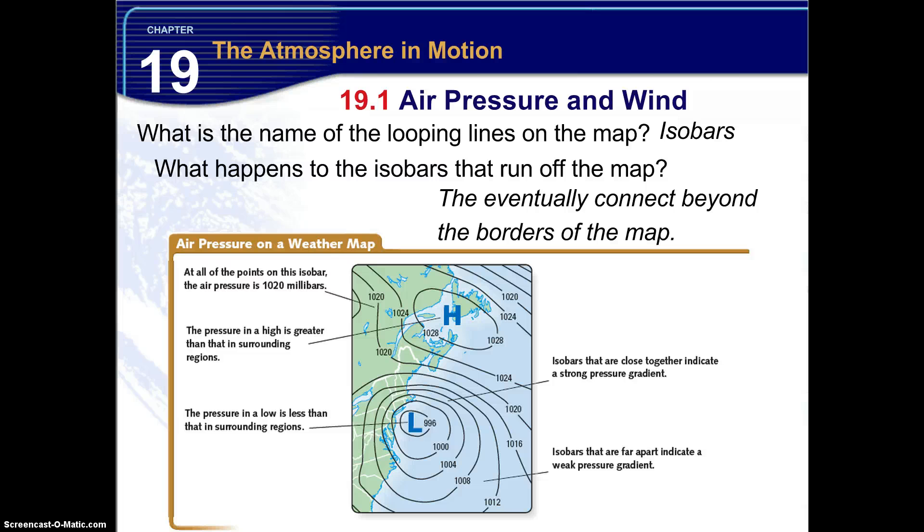So if you check this map out here, we have at all of the points on this isobar, this 1020, the air pressure is 1020 millibars. Millibars is the unit for air pressure.